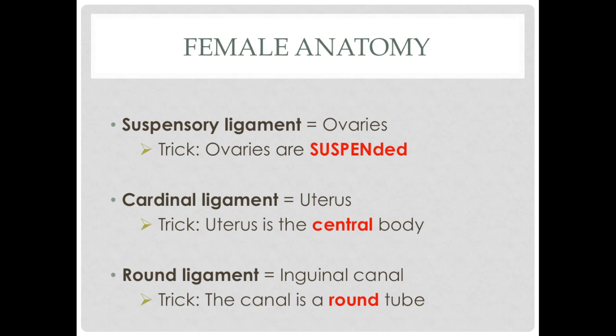Female anatomy contains three important ligaments. The first is the suspensory ligament, which has to do with the ovaries and oophorectomies — think that the ovaries are suspended, like two little grapes right there suspended. The cardinal ligament has to do with the uterus and hysterectomies — think that the uterus is the central body, like the word cardinal, a high-rank thing everything revolves around, in the center of the reproductive system. The round ligament has to do with the inguinal canal — think that the inguinal canal is a round tube.